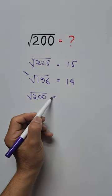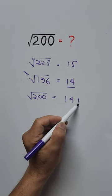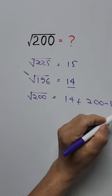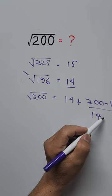So square root of 200 is equal to the base, 14, plus the difference of these two numbers, 200 minus 196, divided by the base number times 2.